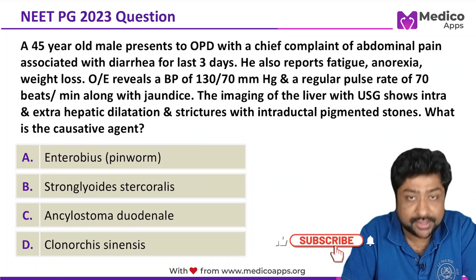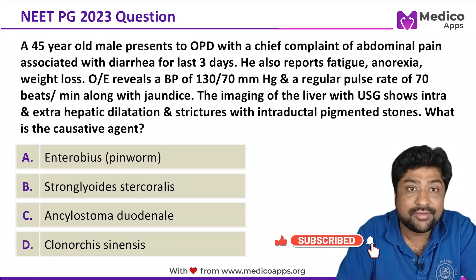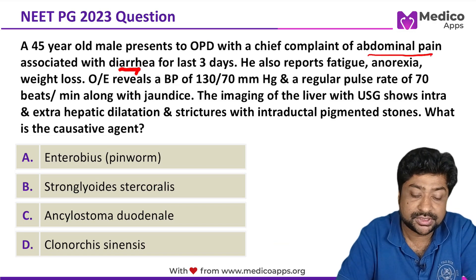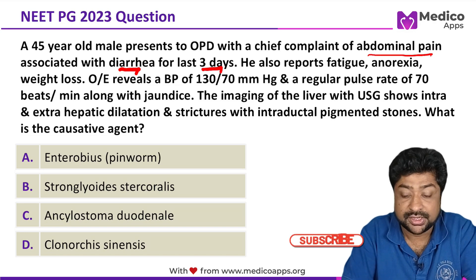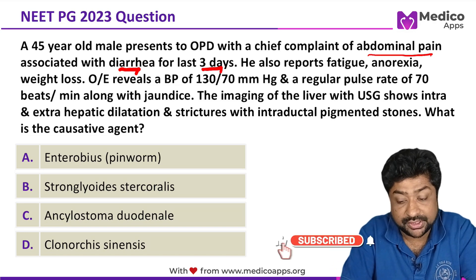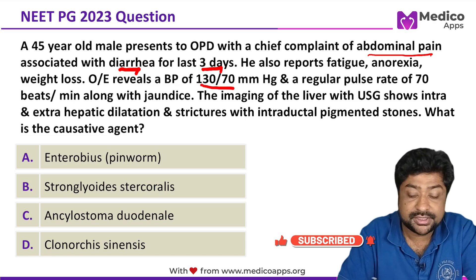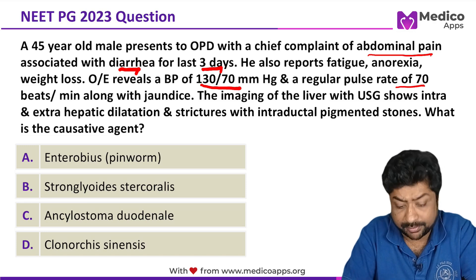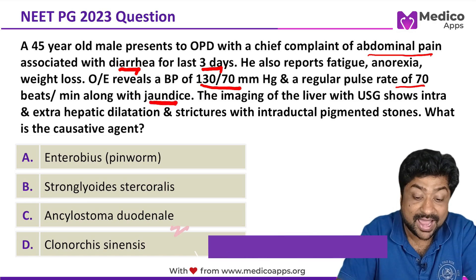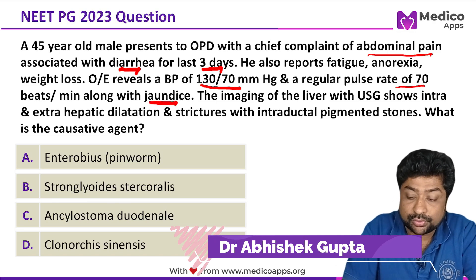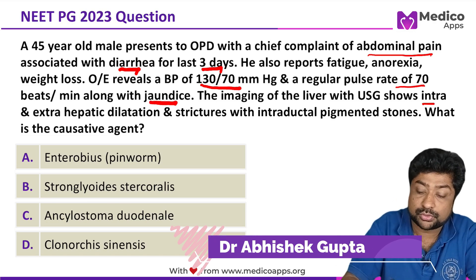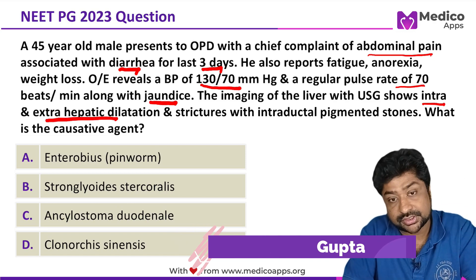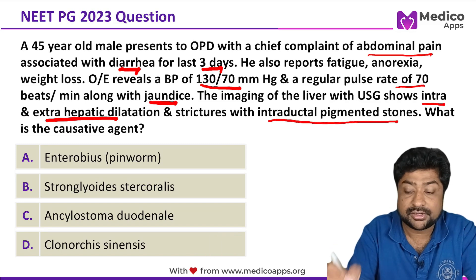This question appeared in NEET PD 2023. A 45-year-old male presented to OPD with chief complaints of abdominal pain associated with diarrhea of only 3 days duration. He also reports fatigue, anorexia, and weight loss. On examination, BP is 130/70 (normal), pulse rate is 70 beats per minute (normal), and he has jaundice. Ultrasonography shows intra- and extra-hepatic dilatations with strictures and intraductal pigmented stones.